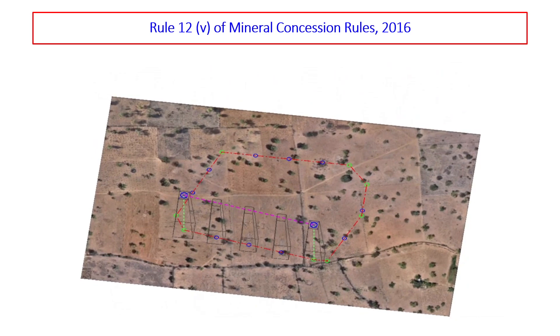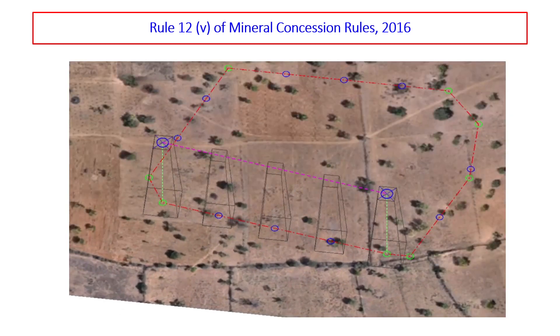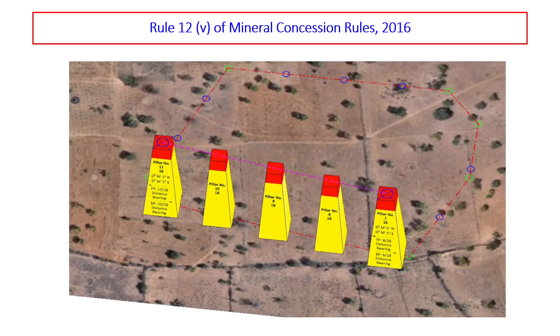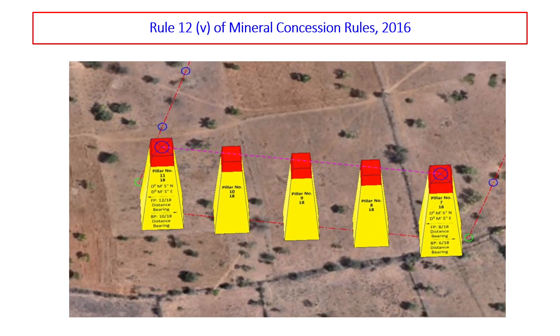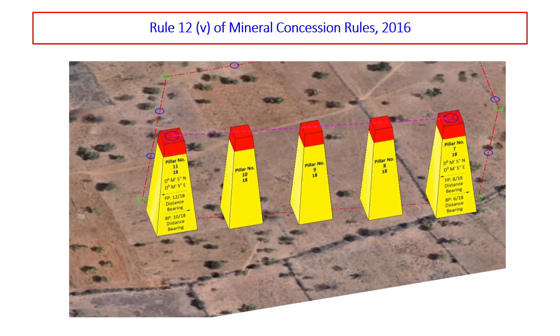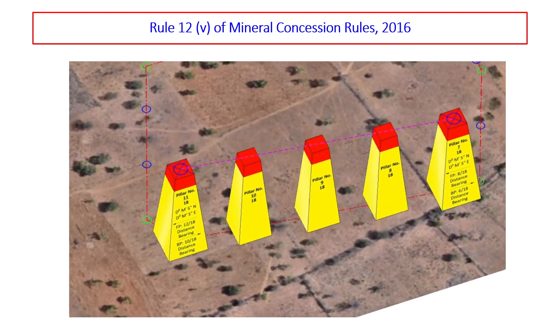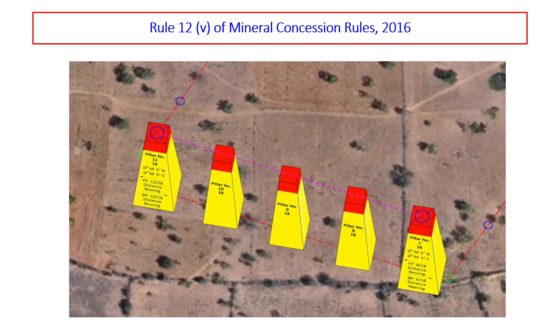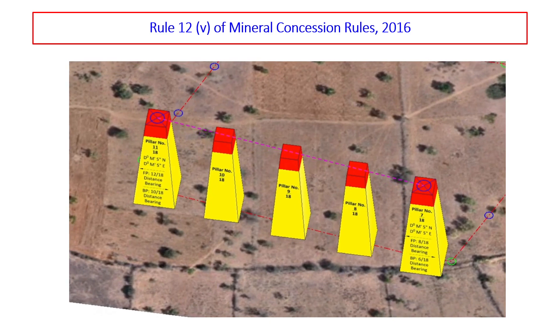So this was about the design and construction of mining lease boundary pillars as per Rule 12(v) of MCR 2016. Remember the lease boundary survey should be accurate within such limits of error as the Controller General Indian Bureau of Mines may specify in this behalf.